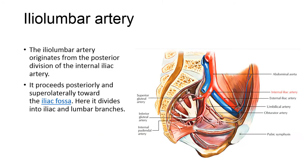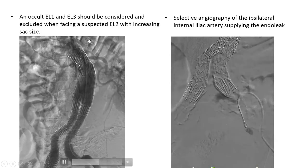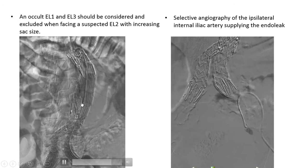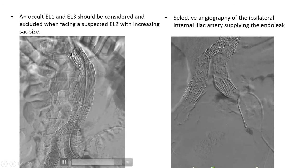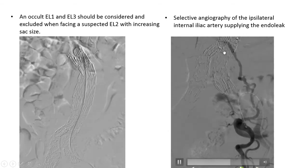The iliolumbar artery originates from the posterior division of the internal iliac artery. It proceeds posteriorly and superolaterally toward the iliac fossa, where it divides into iliac and lumbar branches. On CT angiography and echo, endoleak type 1 and endoleak type 3 should be considered and excluded when facing a suspected endoleak type 2 with increasing sac size, as we did on our angiography.